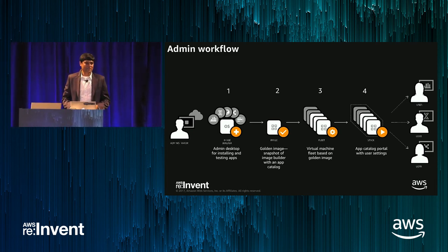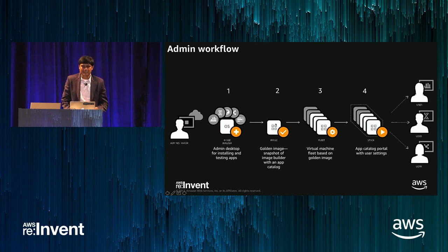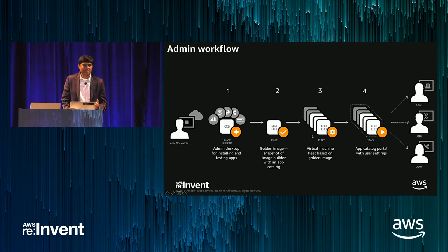Let me start with the admin workflow. The key concepts an admin learns with AppStream: first, they have an admin desktop — an image builder — into which they install their applications. Once they install their applications, they create a golden image containing their catalog of apps. Once the image is available, they can launch this image again to update applications, and the image is then used to serve a catalog of apps to users. This image can be translated into a fleet — an auto-scale group of EC2 instances containing each user's applications.